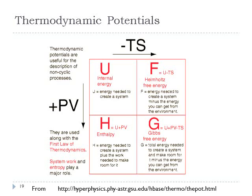Now we'll look at the four main thermodynamic potentials: internal energy, enthalpy, Helmholtz free energy, and Gibbs free energy. They're all related to each other, and in this course we'll deal with three of the four: internal energy, enthalpy, and Gibbs free energy — with enthalpy used most frequently. They all have units of energy, and you need to be careful about which one you're using at any given time.